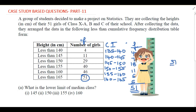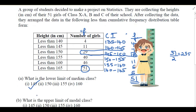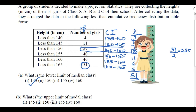N/2 = 51/2 = 25.5. We find the cumulative frequency which is greater than or equal to 25.5, which is 29. The corresponding class interval is our median class: 145–150. The lower limit of the median class is therefore 145.